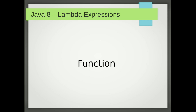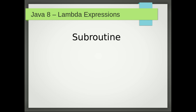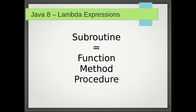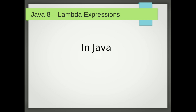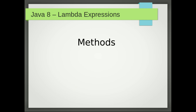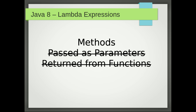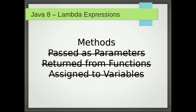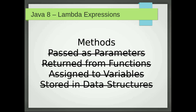Which means if you give a particular input, you will always get the same output for that particular input. But I'm not just talking about that — also subroutine. It's a set of instructions performing some tasks. In many languages it's called differently — for example, function, method, procedure, and so on. So I'm talking about subroutine. And in Java, a function is a method and it is not a first class citizen. So you cannot pass a method as a parameter, you cannot get a method as a result from another method, you cannot assign it to a variable, and you cannot store it in data structures.